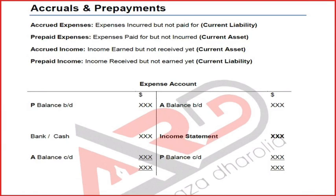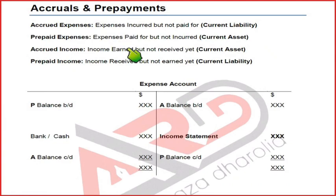Consider a premises example: you own a premises and rent it to me. If I use your premises for three months but haven't paid yet, it is an accrued expense for me — a current liability — because I've used it but not paid. For you, it is accrued income — an asset — because you've earned it but not received payment.